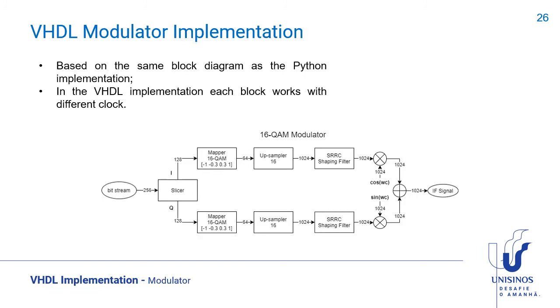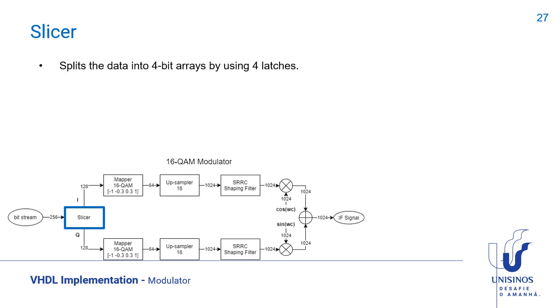The VHDL modulator implementation was based on the same block diagram as the Python implementation. The only difference is that each block works with different clock. The slicer splits the data into 4-bit arrays by using 4 latches for the same reason as the Python modulator.